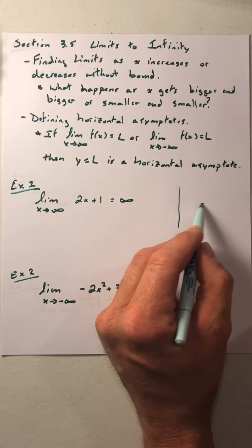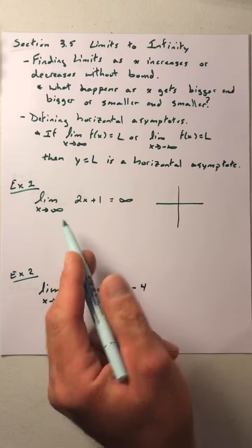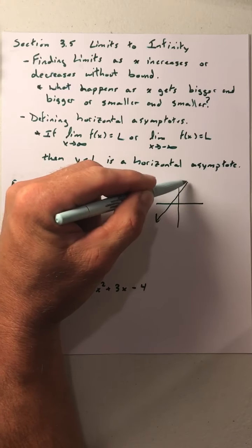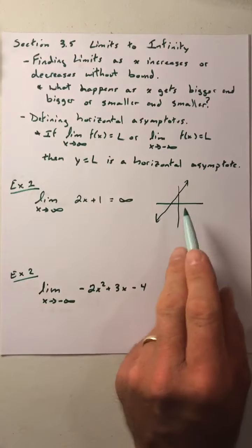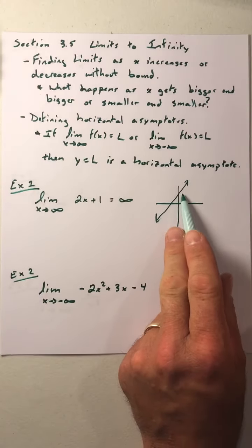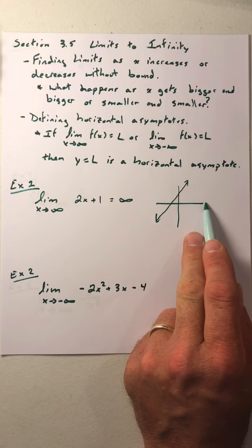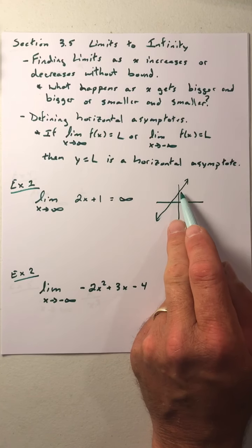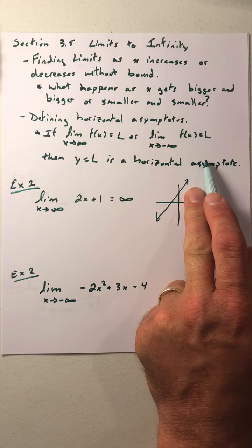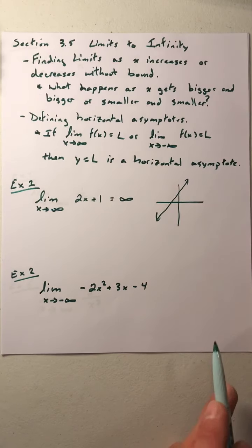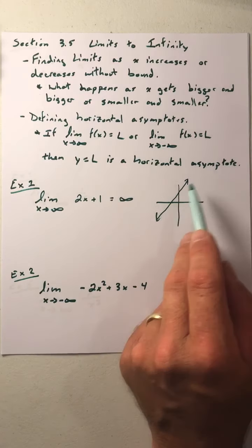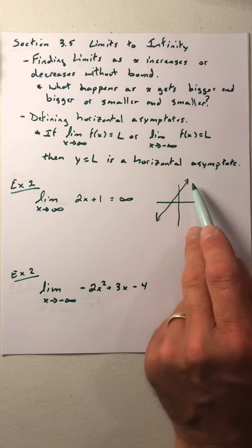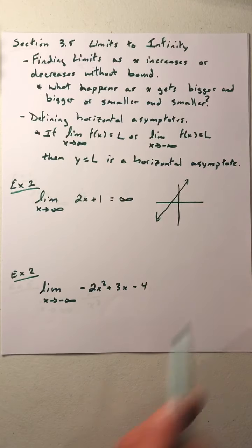If we think about the graph of 2x plus 1, we can see that as x gets larger and larger, the y values are getting larger and larger as well. So that's why this is going off into infinity as the y values.